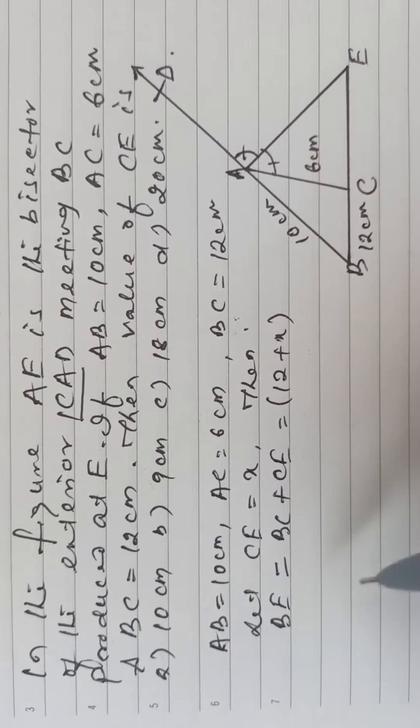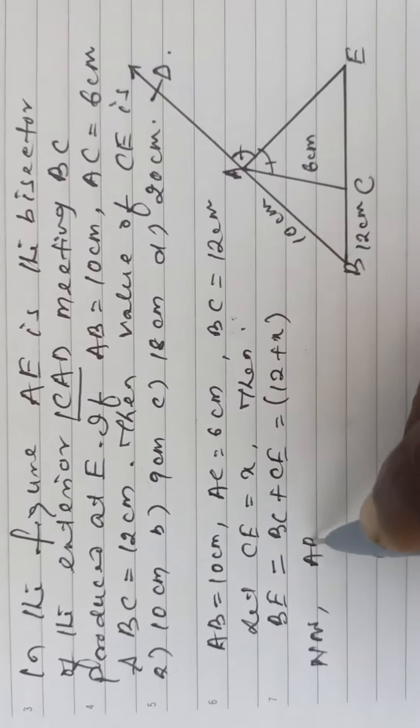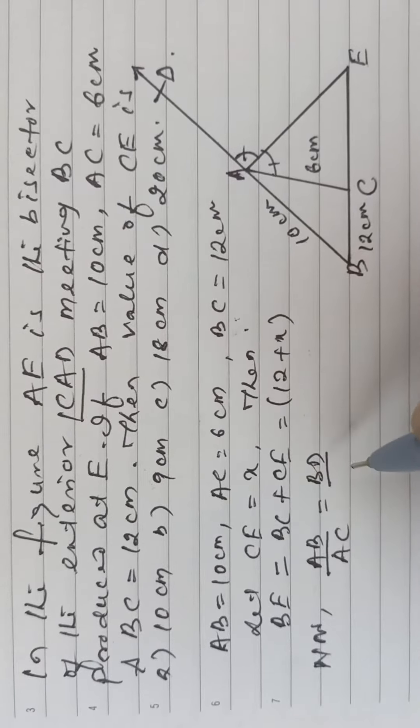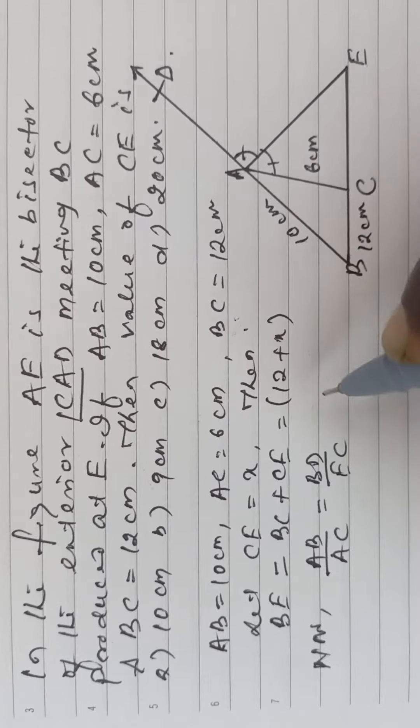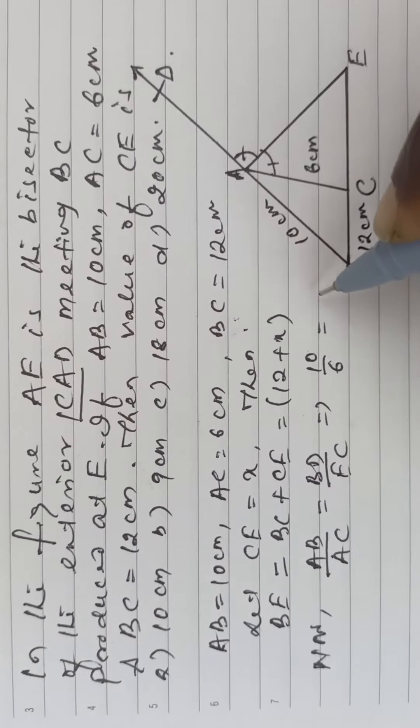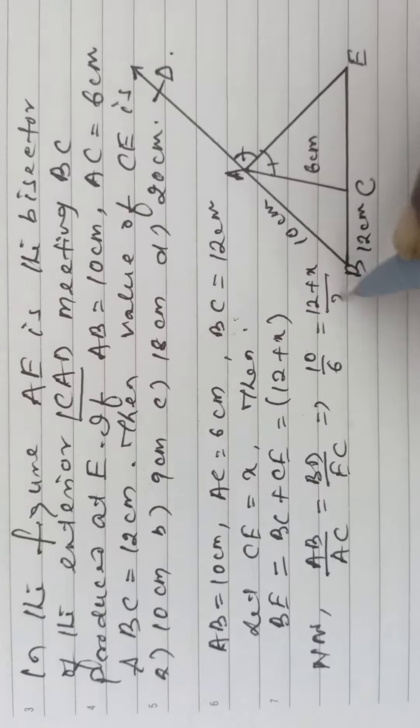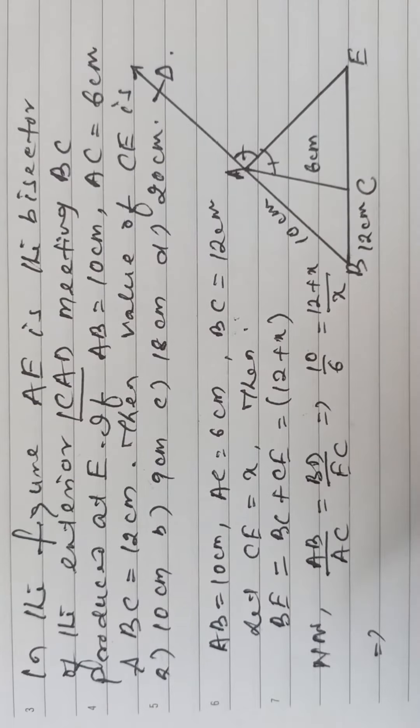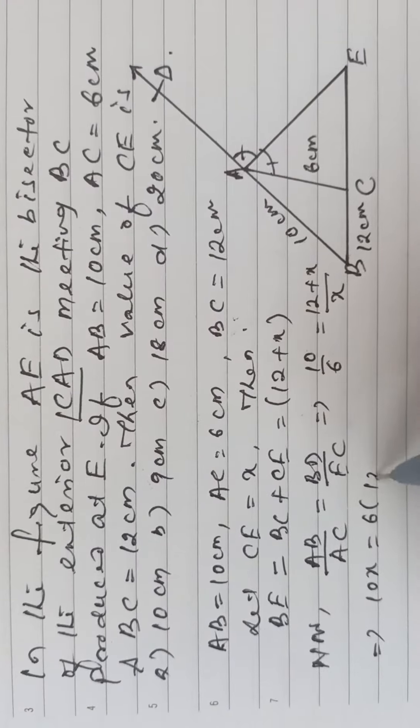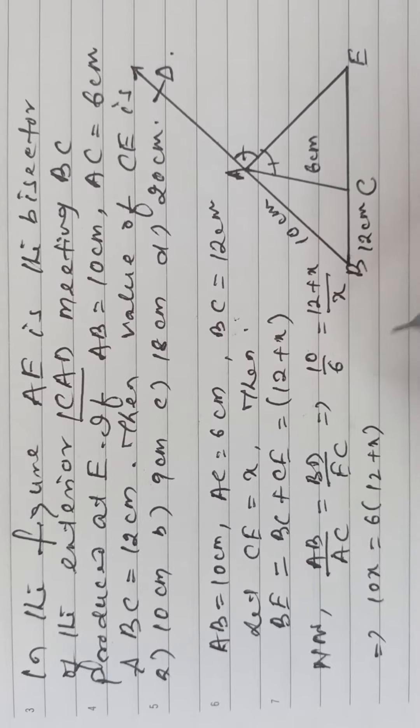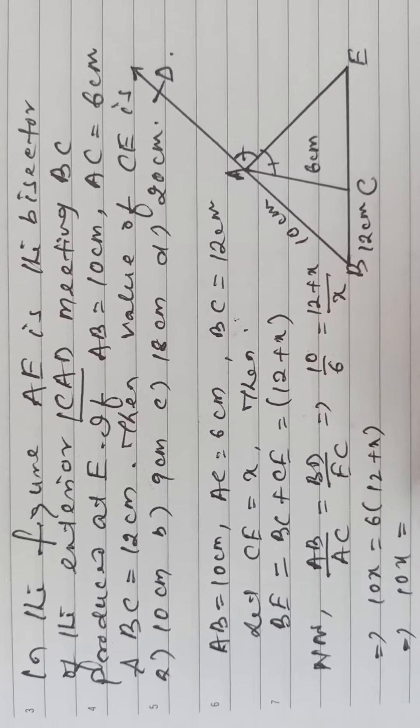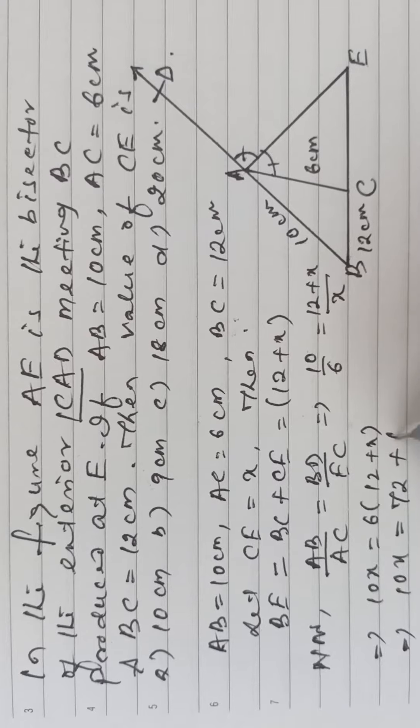Now AB by AC is equal to BE by EC, that is 10 by 6 is equal to 12 plus X by X. Then 10X is equal to 6 into 12 plus X is equal to, then X is equal to 72 plus 6X.